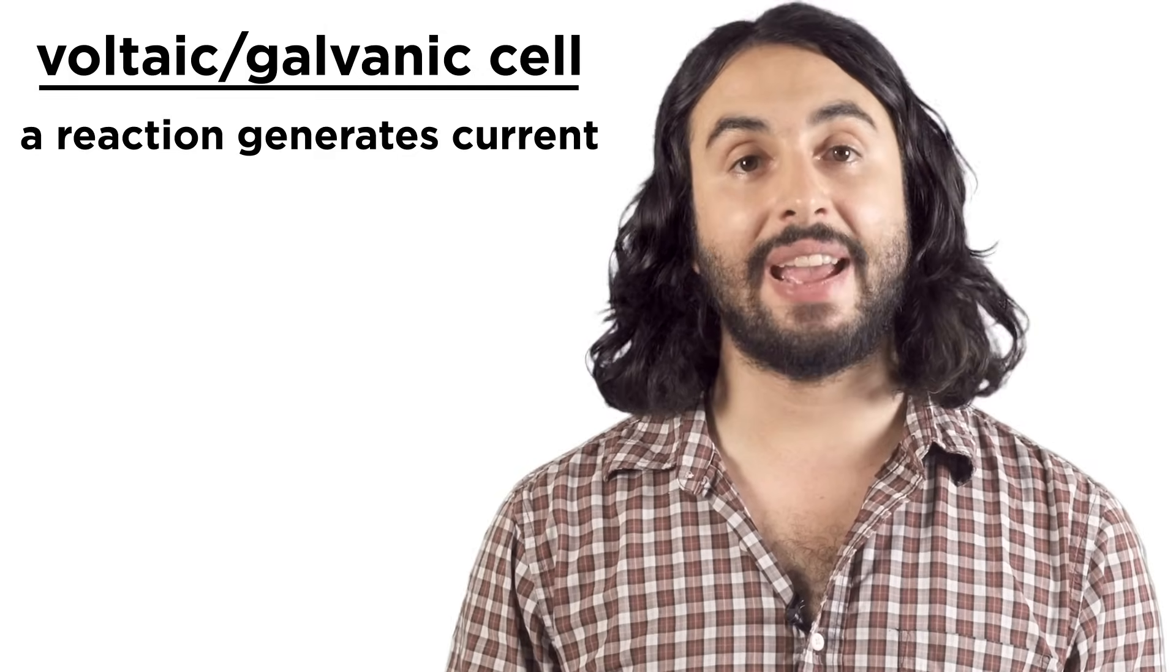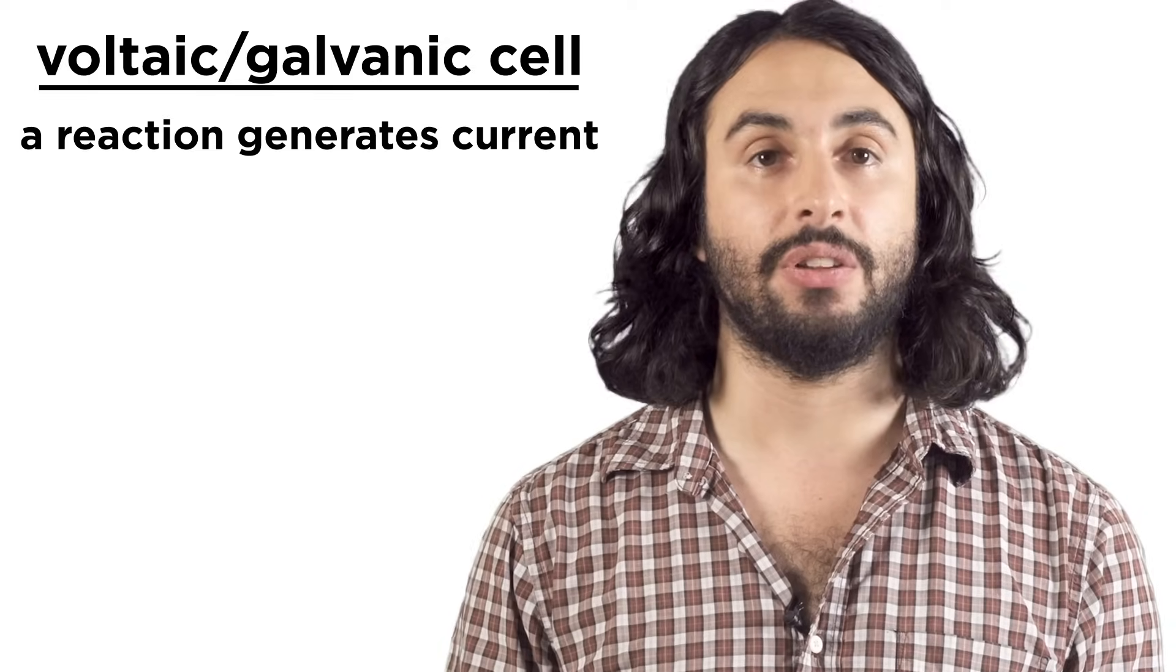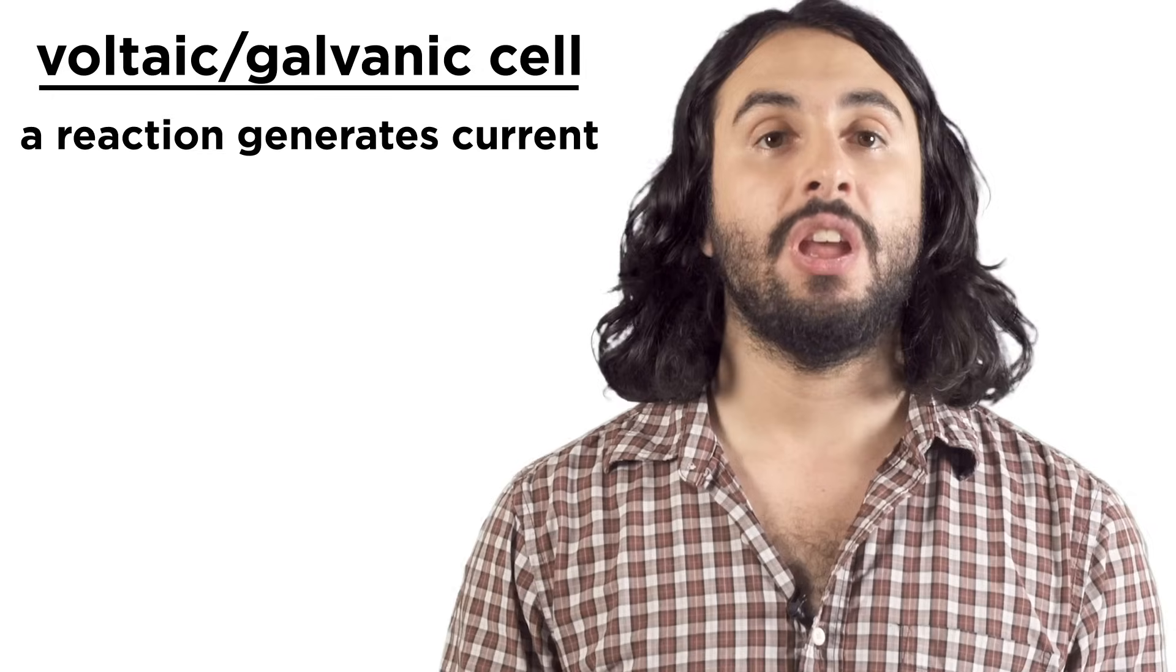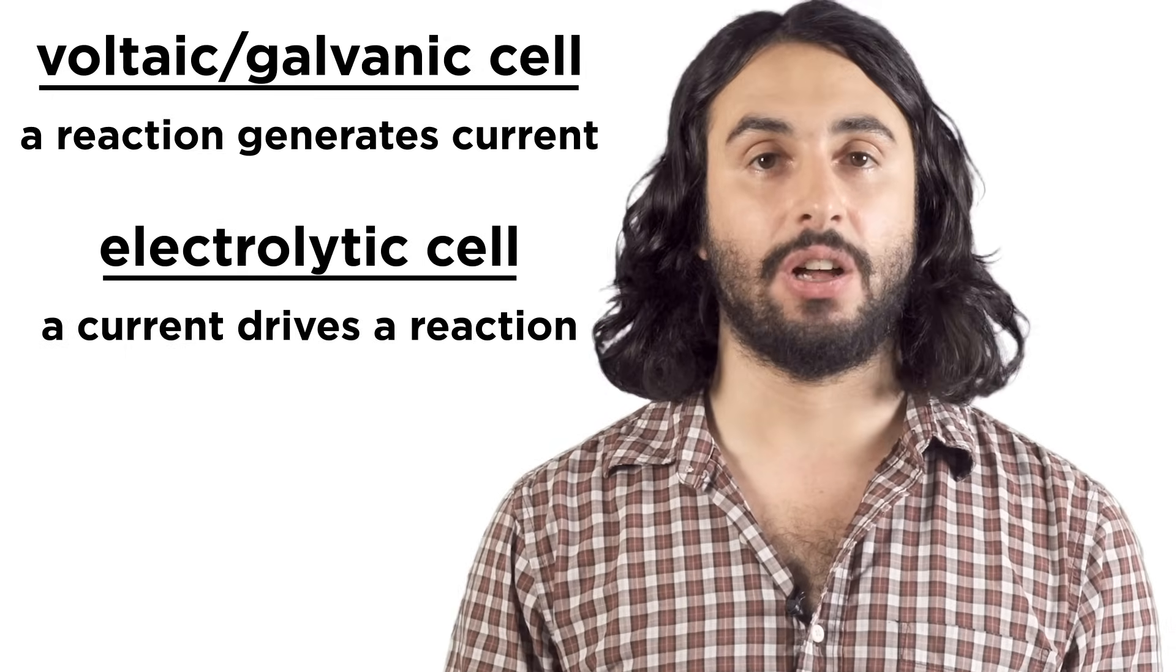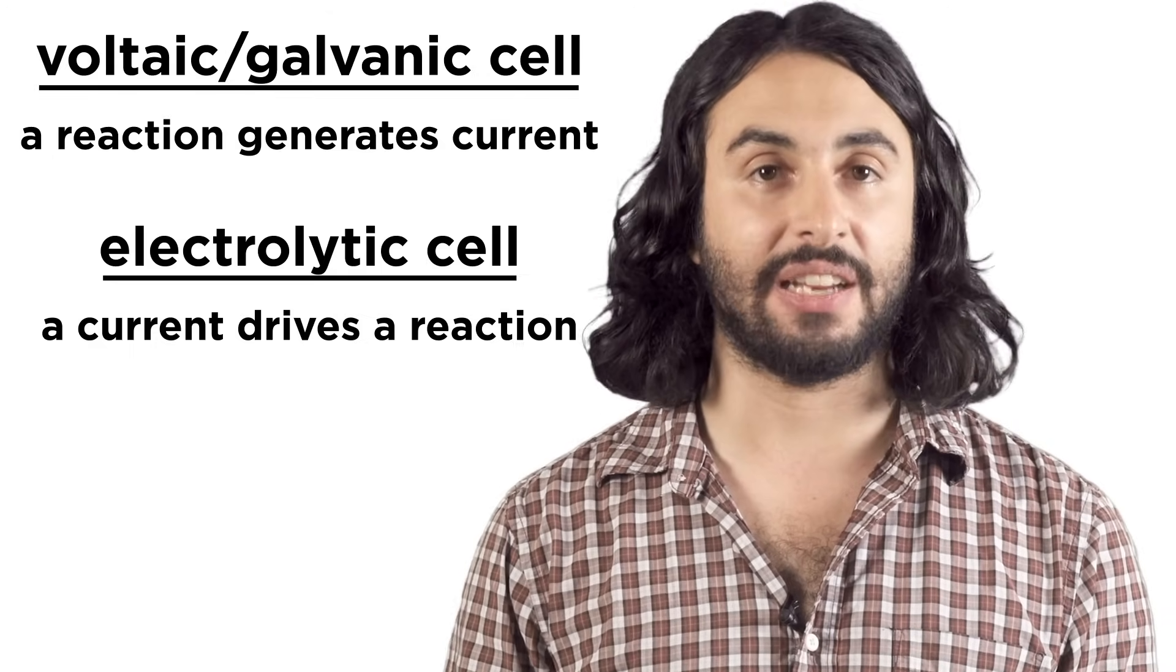A voltaic or galvanic cell is one example of a kind of electrochemical cell in which a spontaneous oxidation-reduction reaction generates an electric current. In an electrolytic cell, an electric current drives an otherwise non-spontaneous reaction.